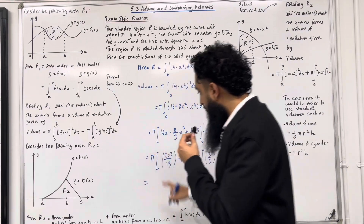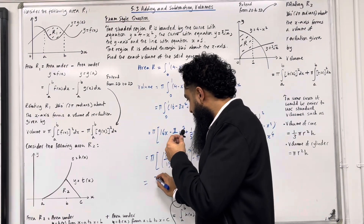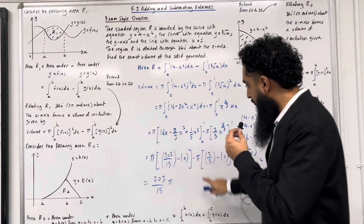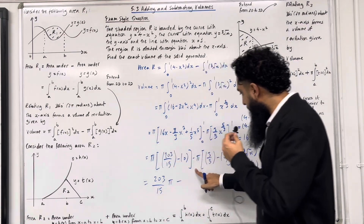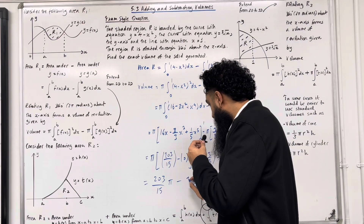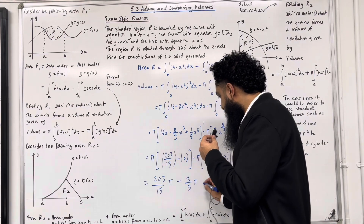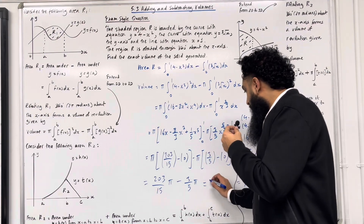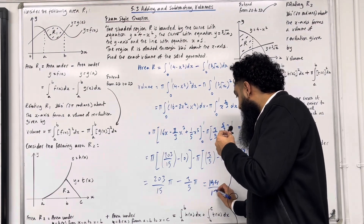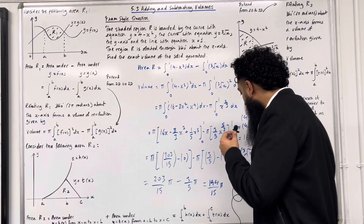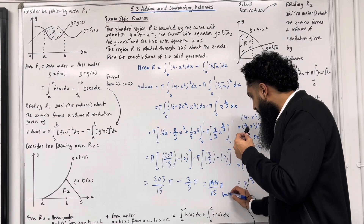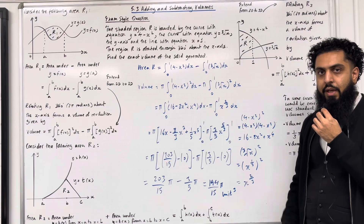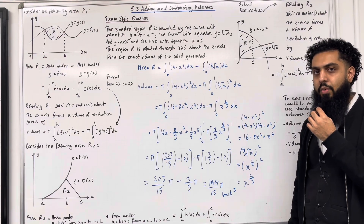So π multiplied by 203/15 gives 203π/15. Subtracting the two gives 194/15 π unit cubed. That there is the exact volume of the solid generated, and this completes the first exam style question.